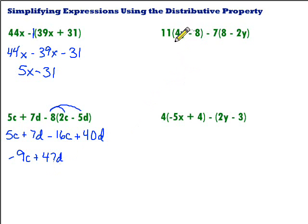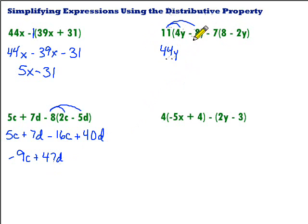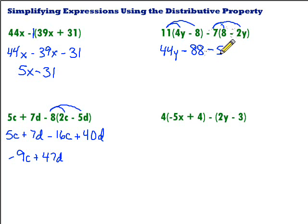Let's take a look at this next one. We've got two sets of parentheses, so we're going to apply the distributive property twice. First, we distribute 11 through the first set: 11 times 4y gives us 44y, and 11 times negative 8 gives us minus 88. Then we have minus 7 — remember to keep that sign with it. Minus 7 times 8 is negative 56. Then minus 7 times negative 2y: a negative times a negative gives us a positive, so positive 14y.